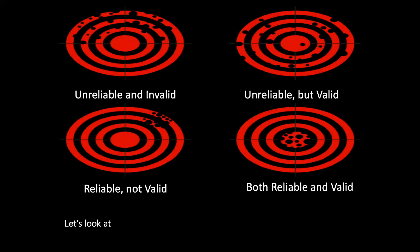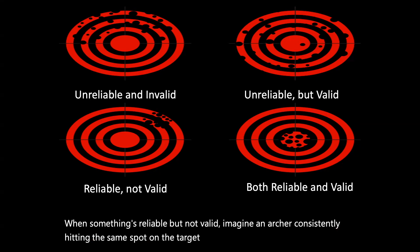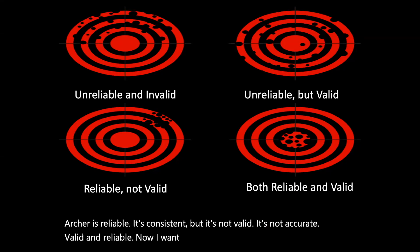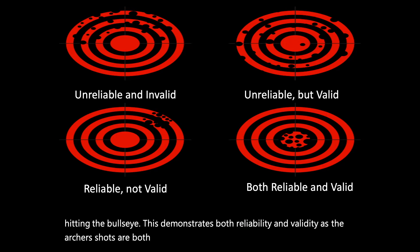Consider the target analogy. When something is reliable but not valid, imagine an archer consistently hitting the same spot on a target, but that spot is not the bullseye — consistent but not accurate. When valid and reliable, imagine the archer consistently hitting the bullseye, demonstrating both reliability and validity, as the shots are both consistent and accurate.